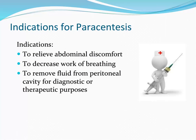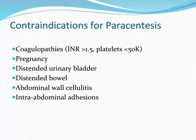Indications for paracentesis are to relieve abdominal discomfort, to decrease the work of breathing by reducing counter-pressure from the diaphragm, and to sample the fluid for diagnostic purposes. Contraindications for paracentesis include coagulopathies — a relative contraindication for just about every procedure, but important to mention so we can keep in mind interventions that can be taken pre-procedure to offset risk of bleeding — as well as pregnancy, distended urinary bladder, distended bowel, abdominal wall cellulitis, and intra-abdominal adhesions.